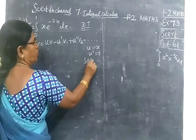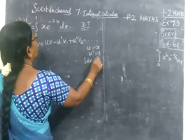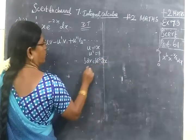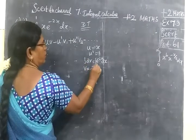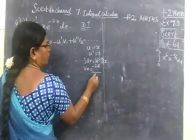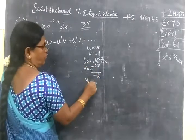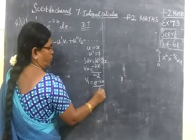Next, integral dv equals integral e power minus 2x dx. Integral and d cancel, so v equals e power minus 2x divided by minus 2. Next, v1 equals e power minus 2x divided by minus 4.